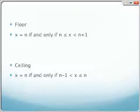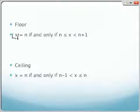Floor functions and ceiling functions have useful properties. The floor function of x is equal to n if and only if n is less than or equal to x and n plus 1 is greater than x. The ceiling function of x is equal to n if and only if n minus 1 is less than x and n is greater than or equal to x.